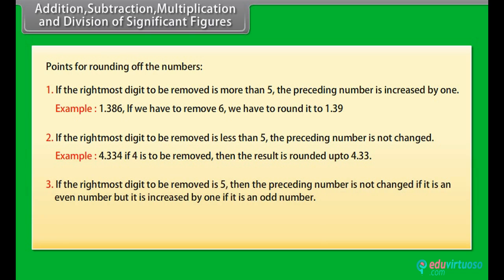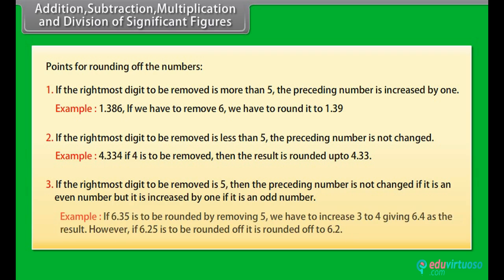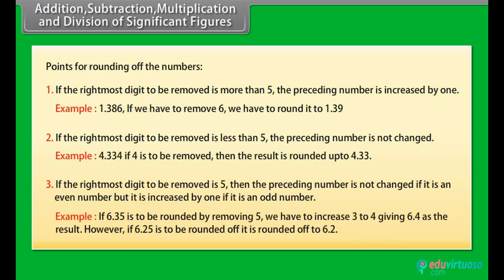If the rightmost digit to be removed is 5, then the preceding number is not changed if it is an even number but it is increased by 1 if it is an odd number. Example: If 6.35 is to be rounded by removing 5, we have to increase 3 to 4 giving 6.4 as the result. However, if 6.25 is to be rounded off, it is rounded off to 6.2.